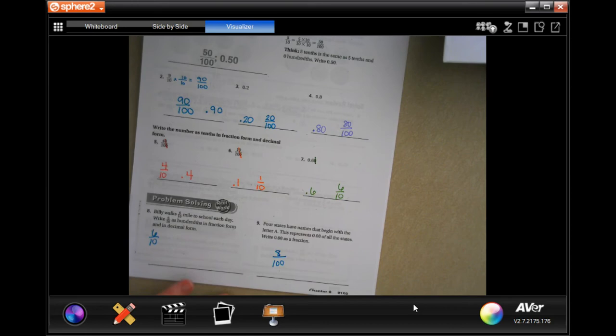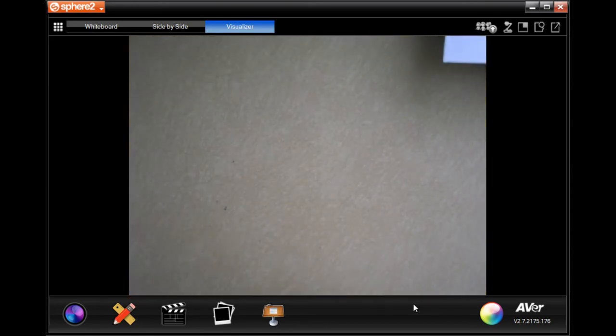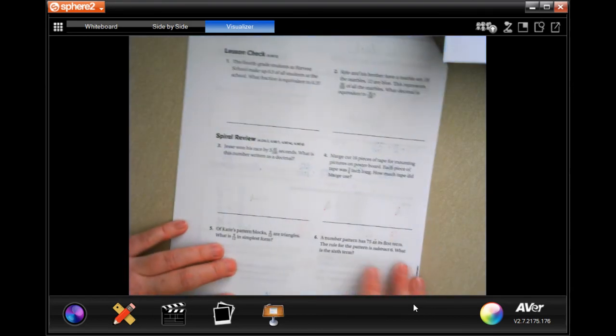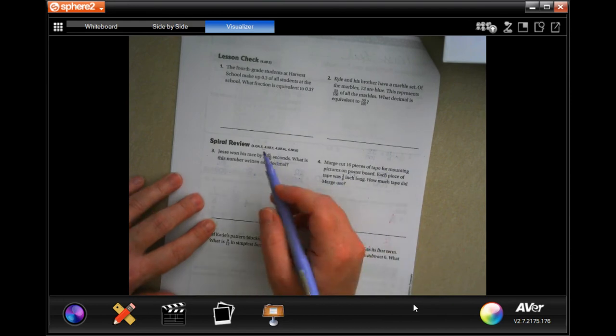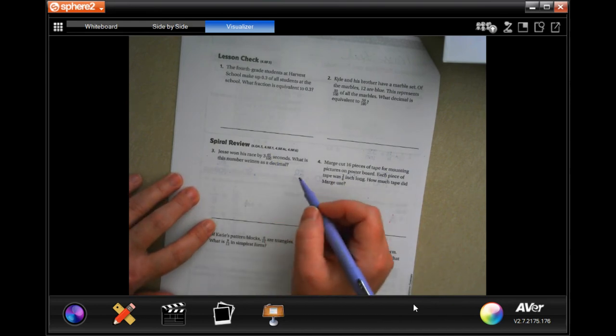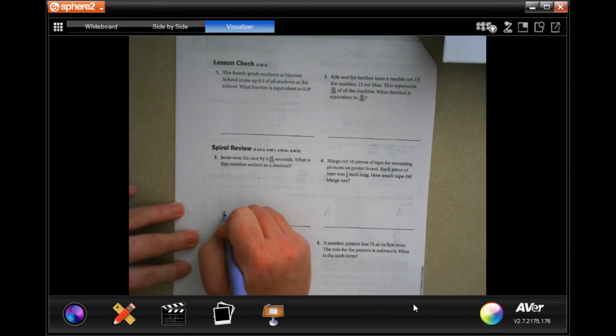All right, we're going to do the lesson check and get to the review. Jesse won his race by 3 and 45 hundredths of a second. What is the number written in decimal? It's going to be 3 point 45. We have the whole number that doesn't change, and then 45. As long as that five is in the hundredths place, which it is, that's it.